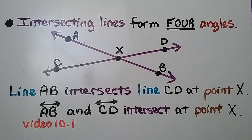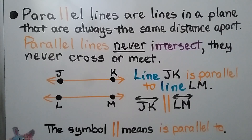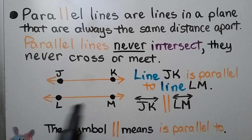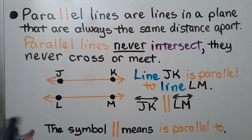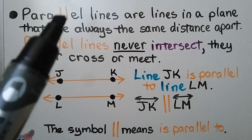Line AB right here and line CD right here — we read this as 'line AB and line CD intersect at point X.' Parallel lines are lines in a plane that are always the same distance apart, and parallel lines never intersect — they never cross or meet. If you look at the word 'parallel,' the two L's are making parallel lines, so that will help you remember.